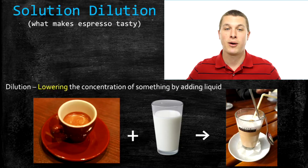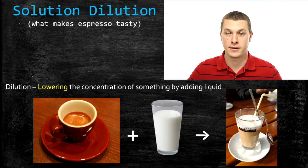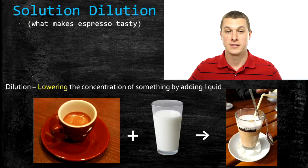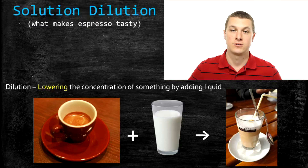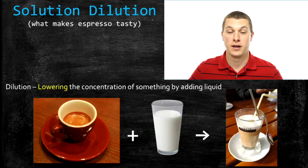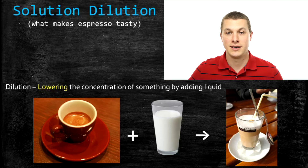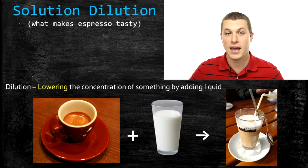Welcome to Real Chemistry. Today we're going to talk about solution dilution. If you spend too much money at Starbucks like I do, you might have seen this process. Solution dilution is just adding some liquid to something to make it less concentrated. When you make a latte, which is a mixture of milk and espresso, the very first step is your barista makes some espresso — a thick, black drink that is really concentrated coffee and caffeine. If you drink that straight, it's not very tasty, so you add milk to it, diluting the coffee, and you get your latte.